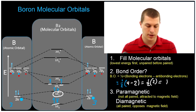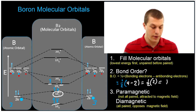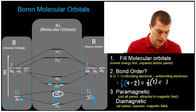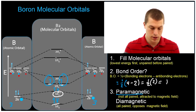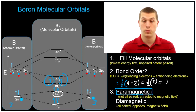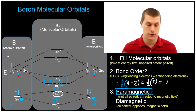Now is B2 diamagnetic or paramagnetic? The electrons up here in our pi orbital are unpaired, and that actually means that it's paramagnetic. So our B2 molecular orbital tells us that this material would be paramagnetic, and that means it would be attracted to a magnetic field.